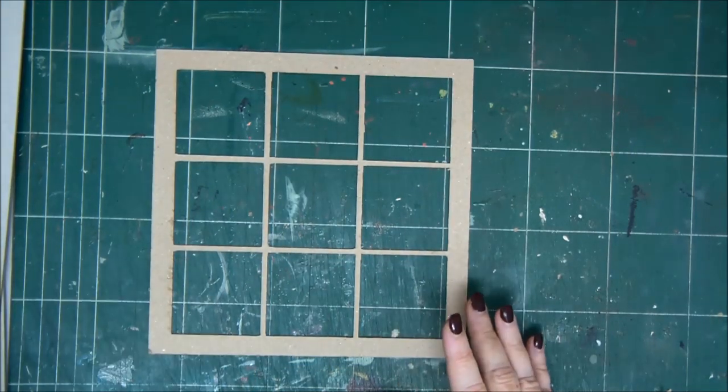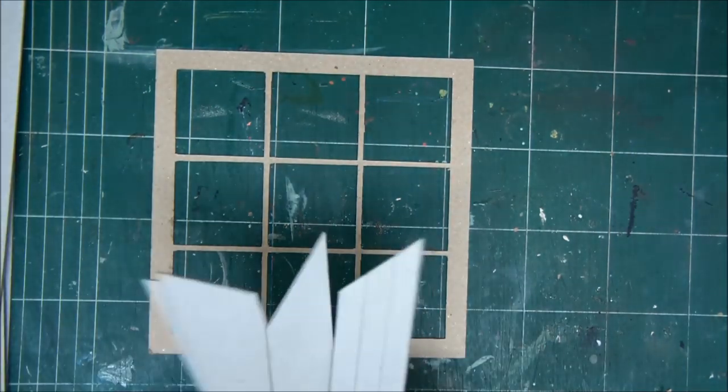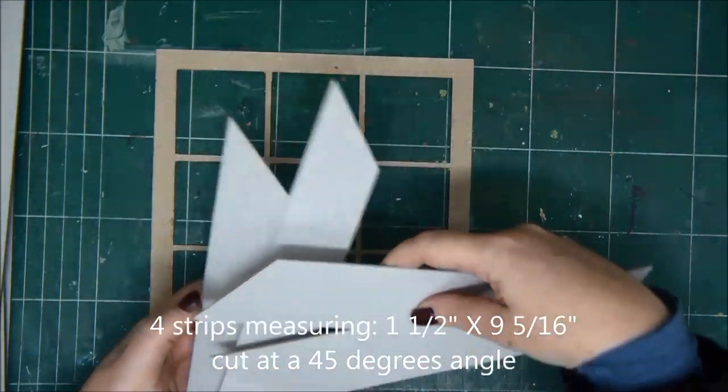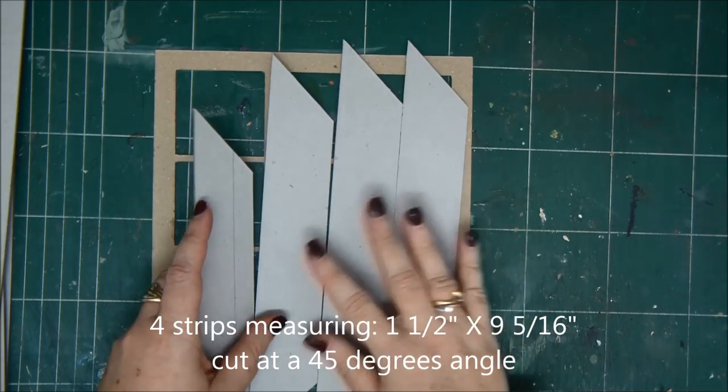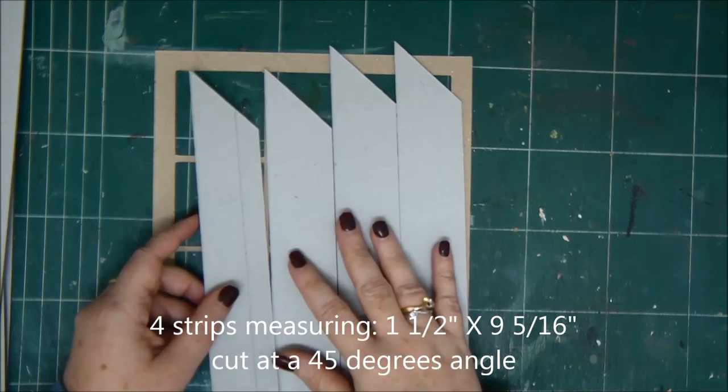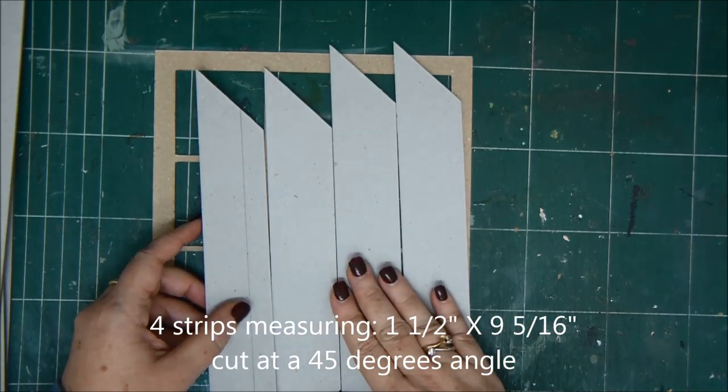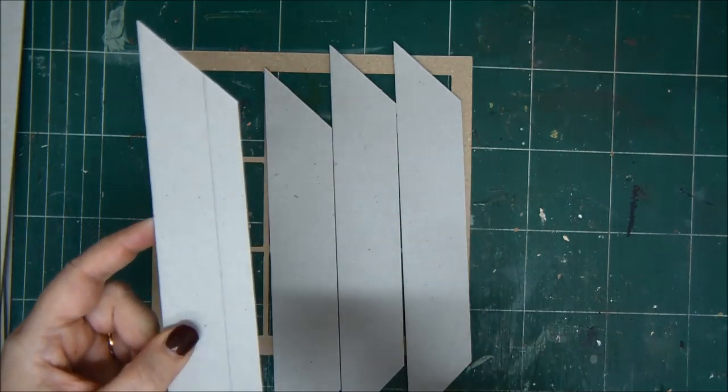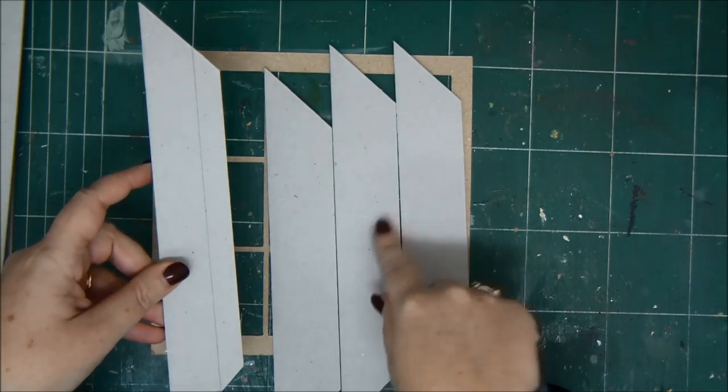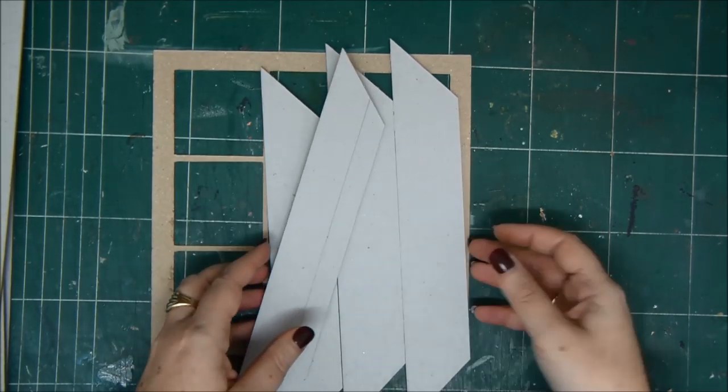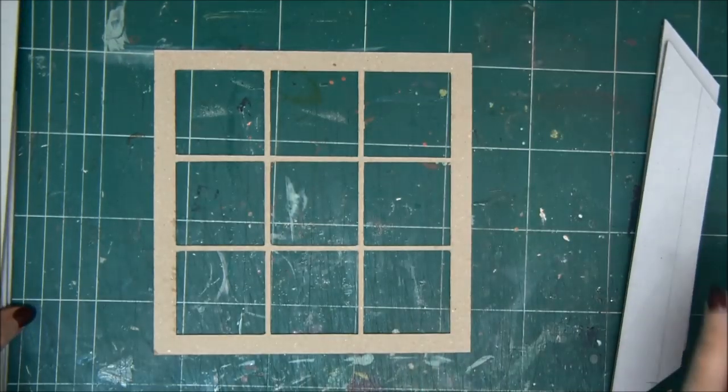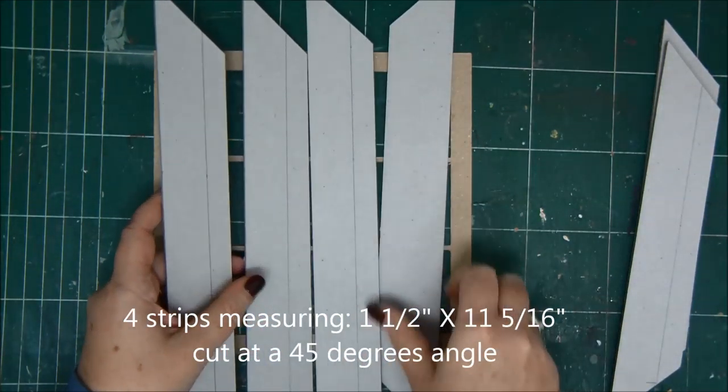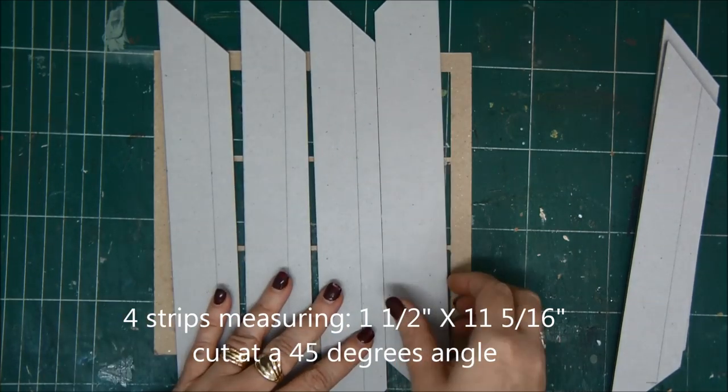We're going to build the frame around it. For the frame what you would need is four strips of chipboard. You have the measurements written on the bottom. I'm using 1 1/16th of an inch thickness of chipboard. This is really good one to use because it's really strong. The shorter strips are for the inner frame. For the outer frame you will need another four strips and you have the measurements down here.